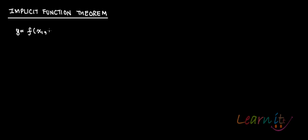In this video we're going to talk about a very simple form of the implicit function theorem. Supposedly you have already seen the kind of function y = f(x1, x2, ..., xn), where y is expressed explicitly in terms of x1 through xn. Taking partial derivatives is simple in this case.